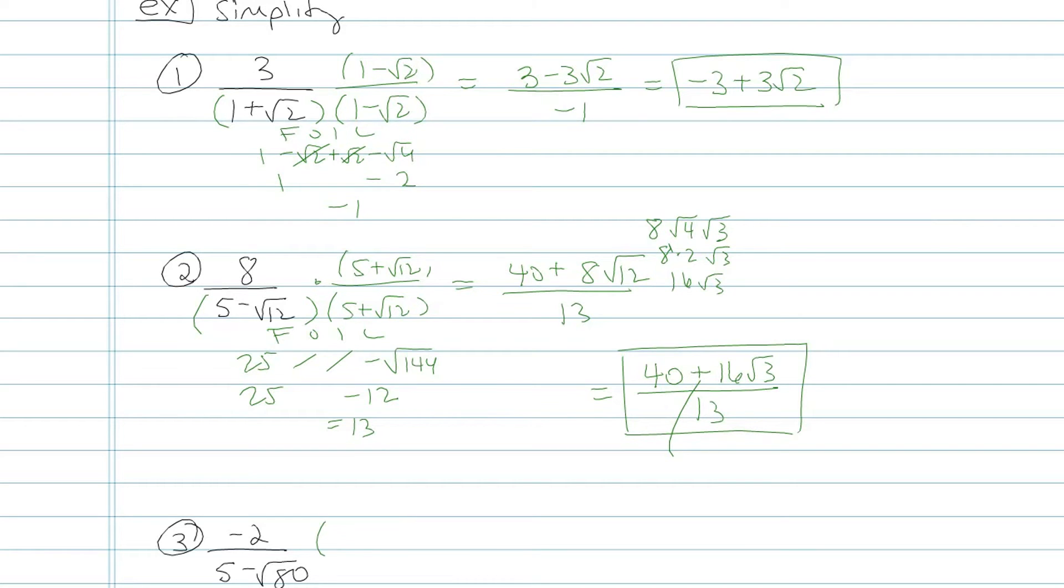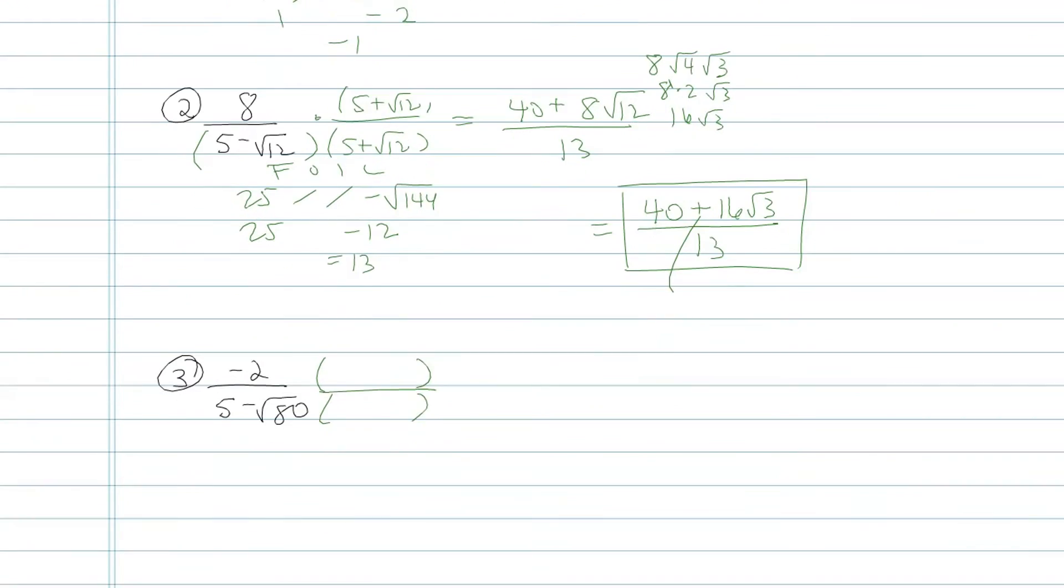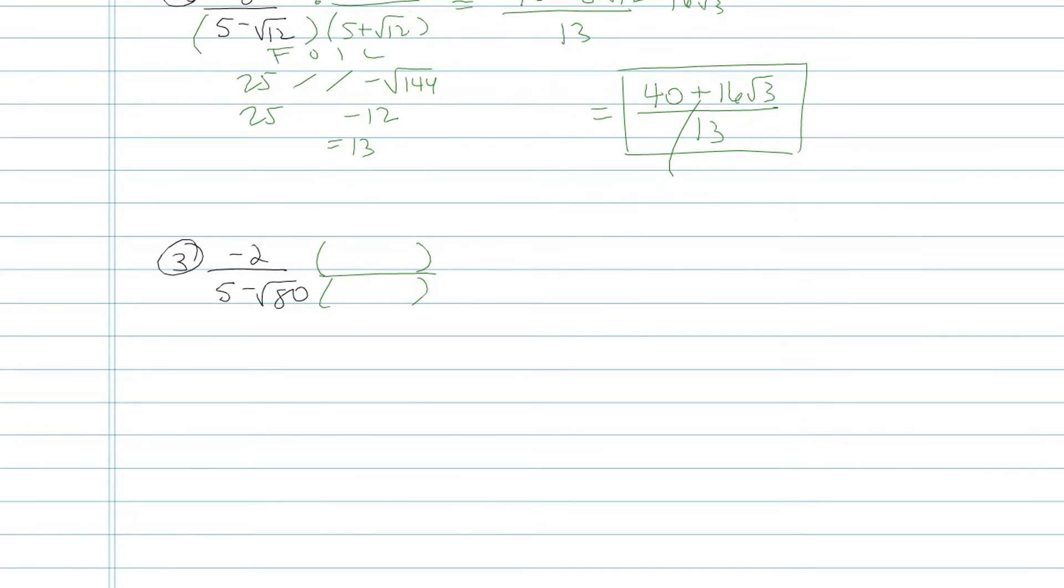Let's try one last one. So now I have a difference on the bottom. I want to multiply by the conjugate. So the conjugate of five minus root eighty would be five plus root eighty, top and bottom. Distribute on the top, so I'll have negative ten minus two root eighty. I'll simplify that later. On the bottom now, I'm going to FOIL. So first gives me twenty-five. Outers and inners cancel out. And I'm left with subtracting eighty. So twenty-five minus eighty on the bottom is negative fifty-five.